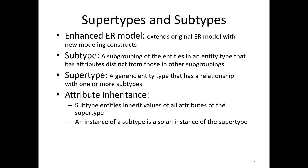Between the supertype and subtype there is something called attribute inheritance, which means subtype entities inherit the values of all attributes of the supertype. For example, if the supertype is student and the subtypes are undergrad and grad student, an instance John Smith who is a graduate student will be inherited by the graduate student subtype along with all his associated values. An instance of a subtype is also an instance of the supertype — that is attribute inheritance.